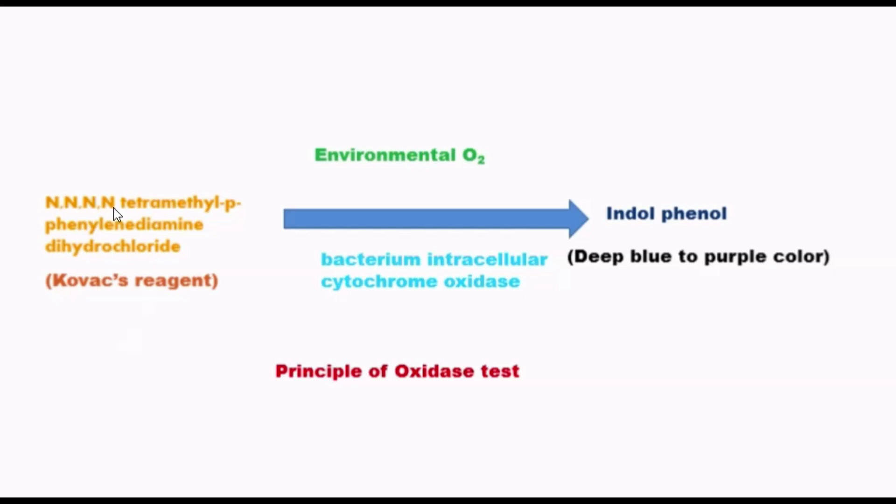Now about principle. N,N,N',N'-tetramethyl-p-phenylenediamine dihydrochloride, also called Kovac's reagent, is the substrate. Bacterium intracellular cytochrome oxidase enzymes act on this substrate in the presence of environmental oxygen to form indophenol, that is deep blue to purple color.